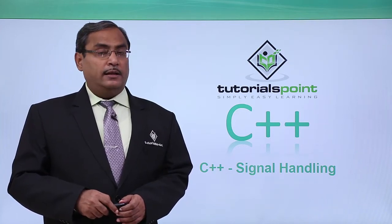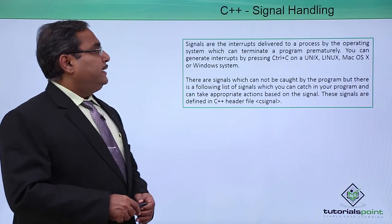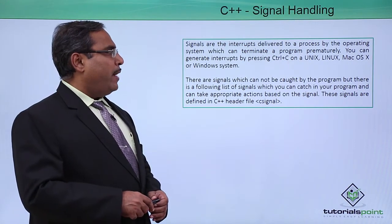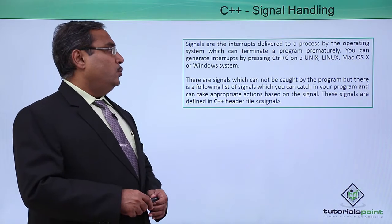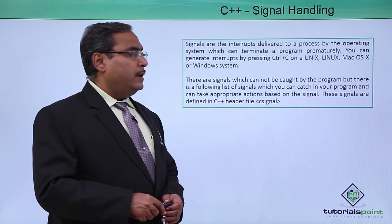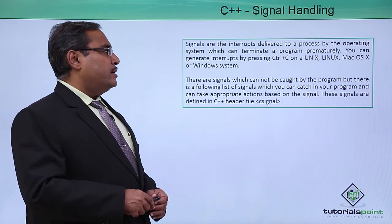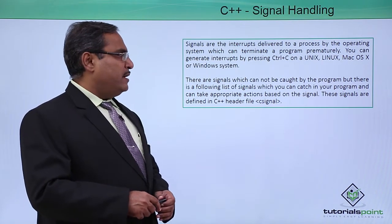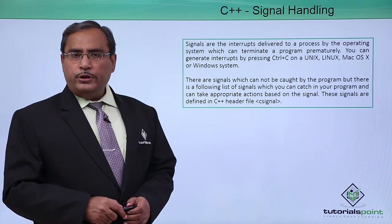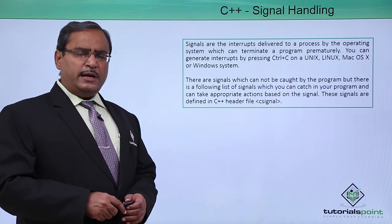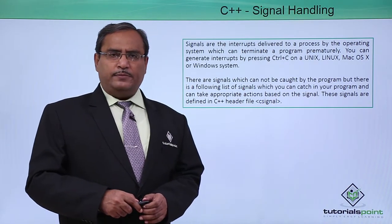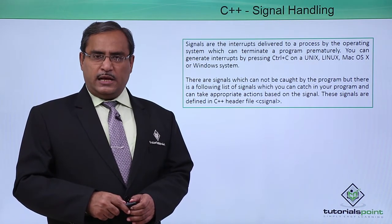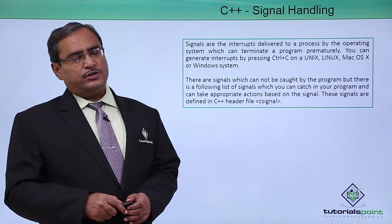C++ signal handling. Signals are the interrupts delivered to a process by the operating system which can terminate a program prematurely. You can generate interrupts by pressing Control+C on Unix, Linux, Mac OS X, or Windows systems. Whenever an operating system generates some signals or interrupts to a particular process, that signal has got generated.